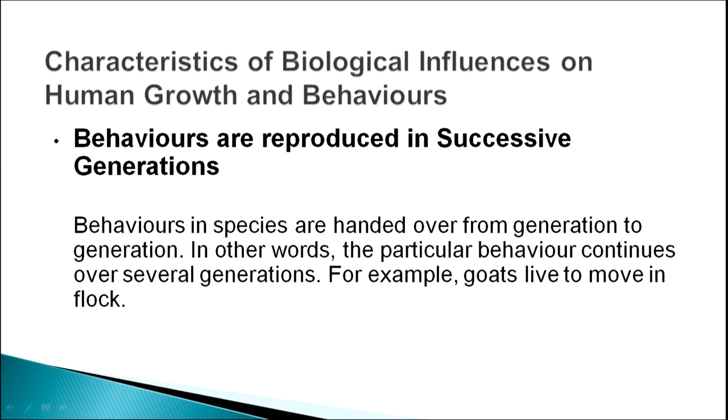Characteristics of biological or genetic influence on human growth and behavior: human behaviors are reproduced in successive generations and handed over from generation to generation. It is generally believed that parents who sing well will have children who also sing well, and parents who are intelligent will also have intelligent children — although variations may occur and the law of regression also takes place, meaning the parents may be very intelligent but the children may not be as intelligent.